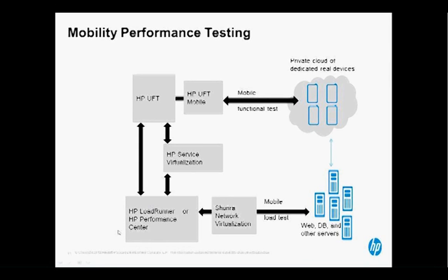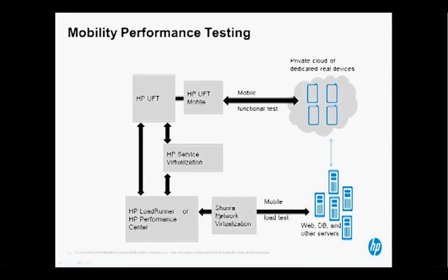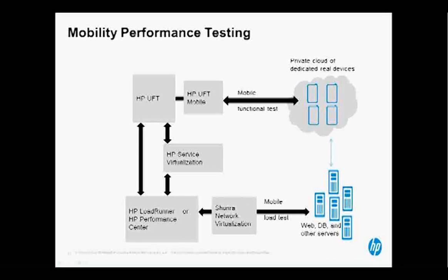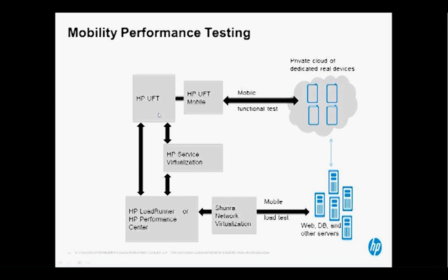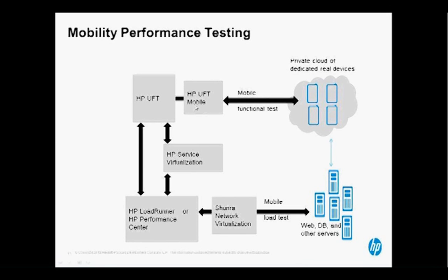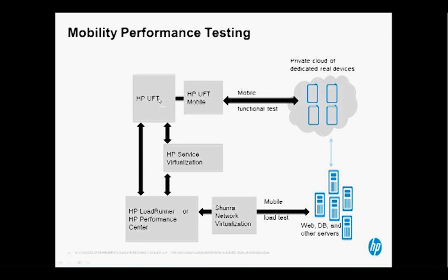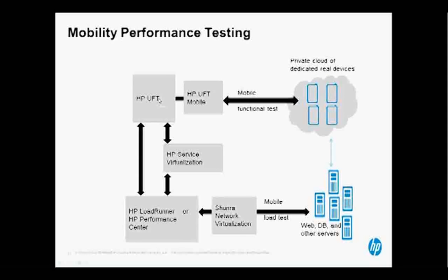In LoadRunner, after you've got your scripts running, you use Shana to emulate the 4G or 3G connectivity or different connectivity that mobile devices come from — that's where the bulk of your load is generated. During a load test, you also run one of these HP UFT Mobile scripts out on the device to get the true end-to-end experience. Running a UFT script — we used to call that GUI testing — tends to be a best practice, and now we're extending this into the mobility arena as well.